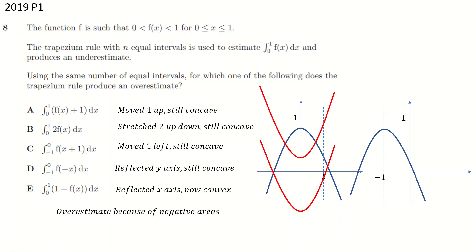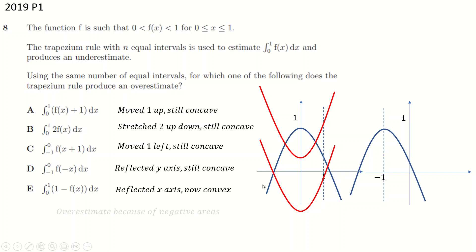You could also think about it in terms of negative areas. If the graph moved up, the trapeziums give straight lines under the curve — you might think that's still an underestimate. But remember these are negative areas. So if the trapeziums gave an answer of 0.5 and the actual answer was minus 0.8, then minus 0.5 is greater than minus 0.8, so you end up with an overestimate anyway. It's just the concavity and convexity that matter.